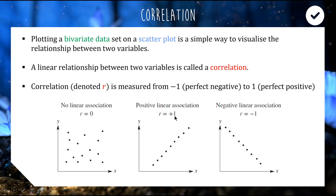These are values you can get with the calculator, which we will do later on — but for now we're just going to estimate. And of course, if you had a perfectly straight line but increasing one variable decreases the other, this is a negative linear association.